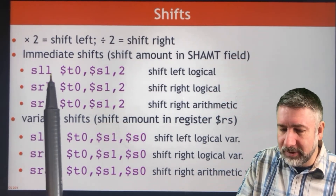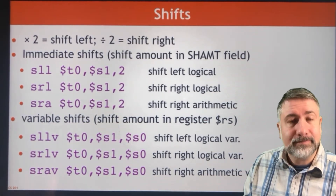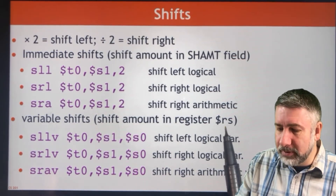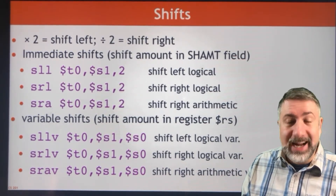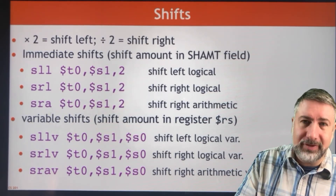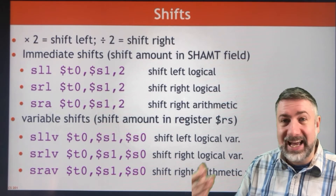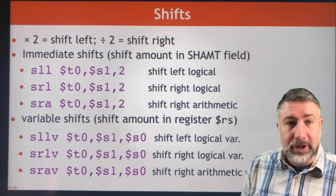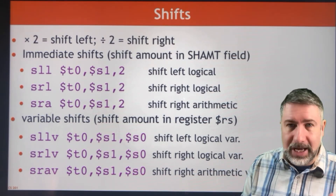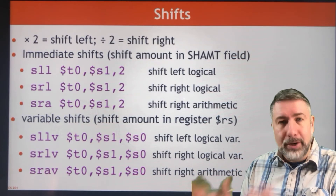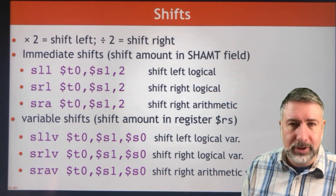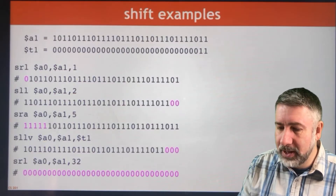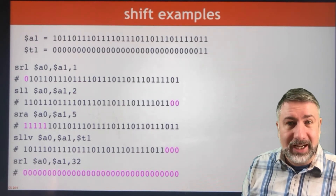Regular shifts are: shift left logical, shift right logical, and shift right arithmetic. We'll talk about the difference between logical and arithmetic shifts in a second. Variable shifts are called variable because the shift amount is stored in register RS. That means you can set the amount to shift at runtime instead of locking it into the instruction at compile time or assemble time. The tradeoff is that variable shifts require an extra step to calculate the shift amount, but allow shifting by a variable amount during operation.